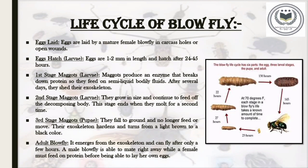A male blowfly is able to mate right away, while a female must feed on protein such as a carcass or faeces before being able to lay her own eggs, and thus the cycle continues. Blowflies often take part in breaking down decomposing bodies and returning the nutrients back to the earth. It's through their efforts that bodies decompose faster than they would otherwise. Because of the specific life cycle of blowflies, the time of death can be determined with a fair level of certainty.